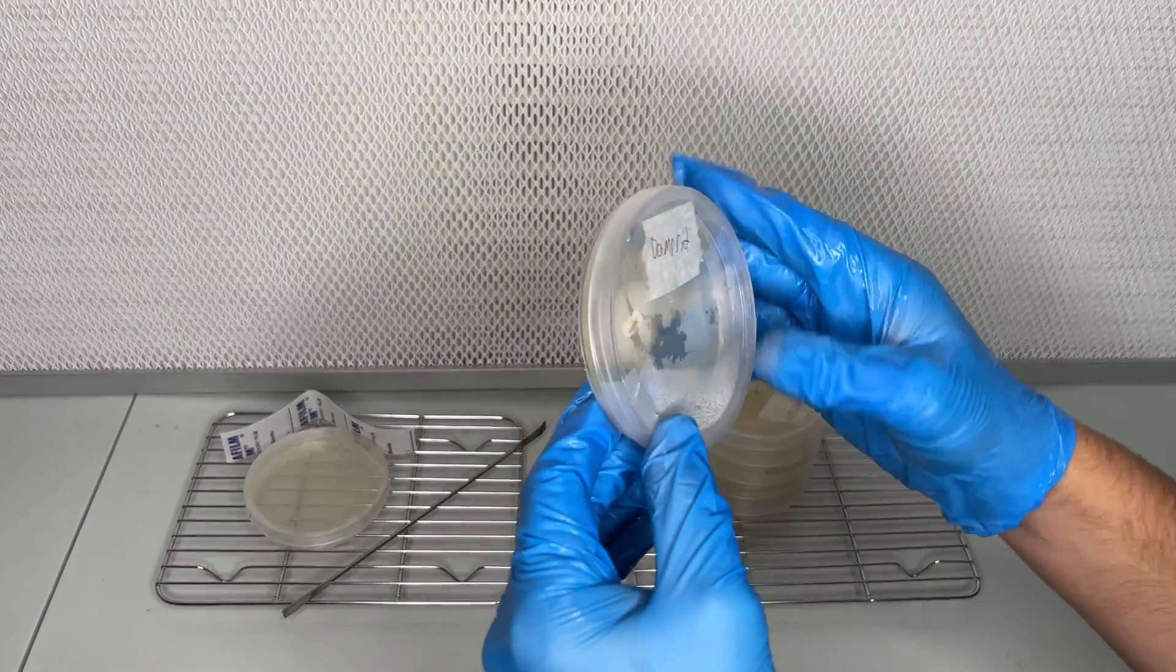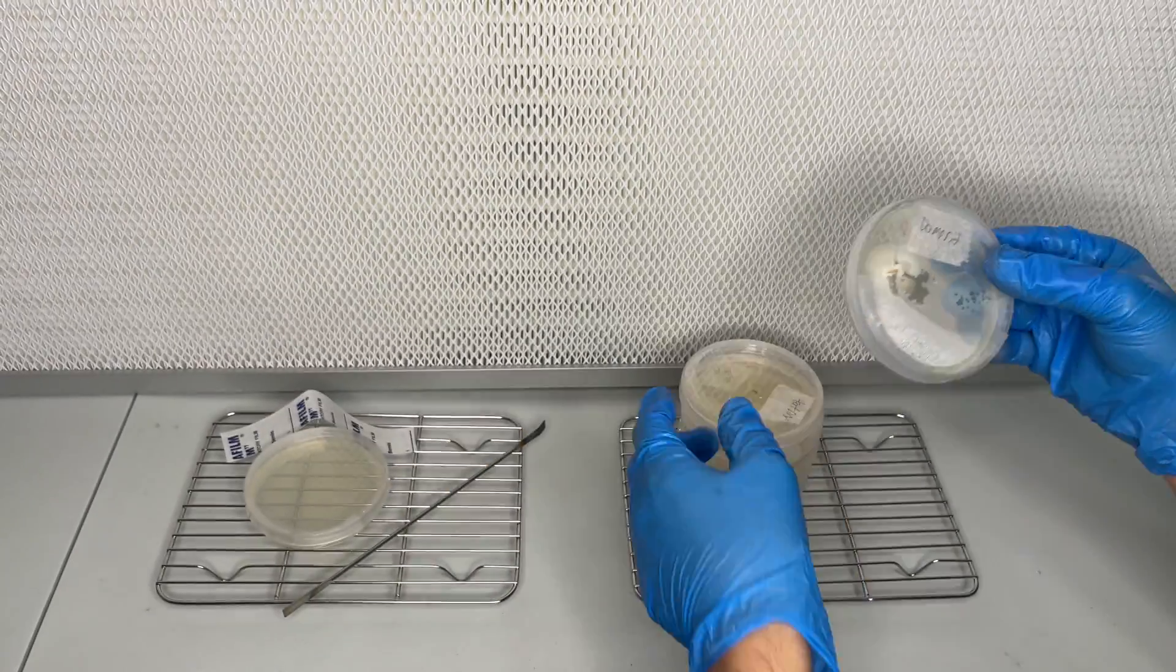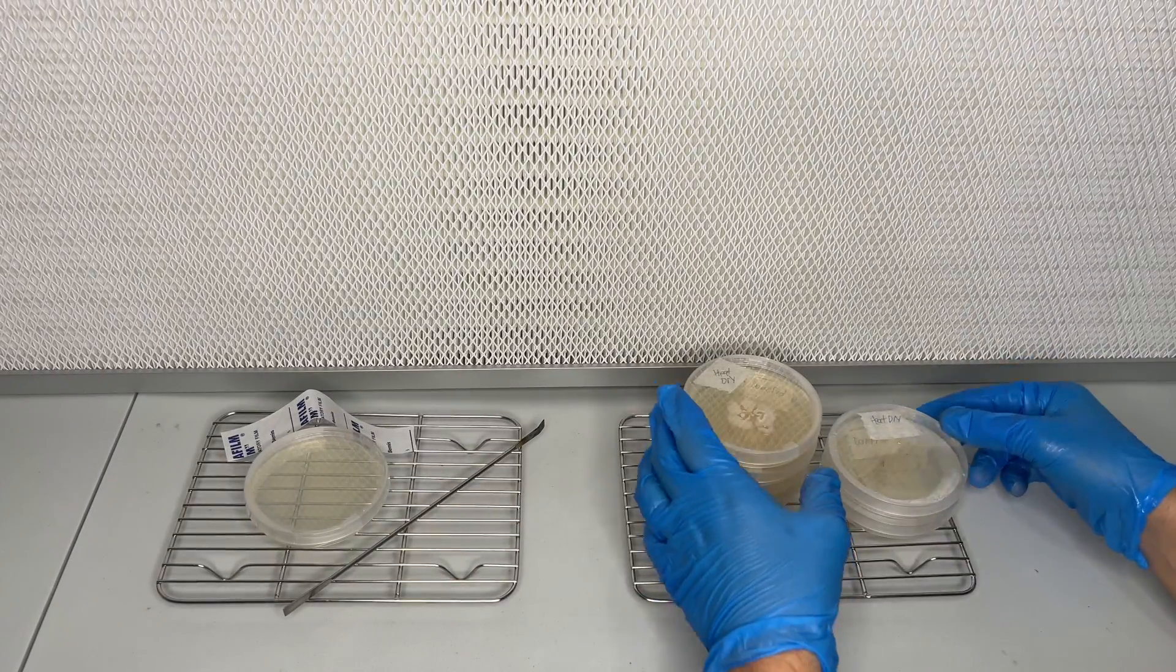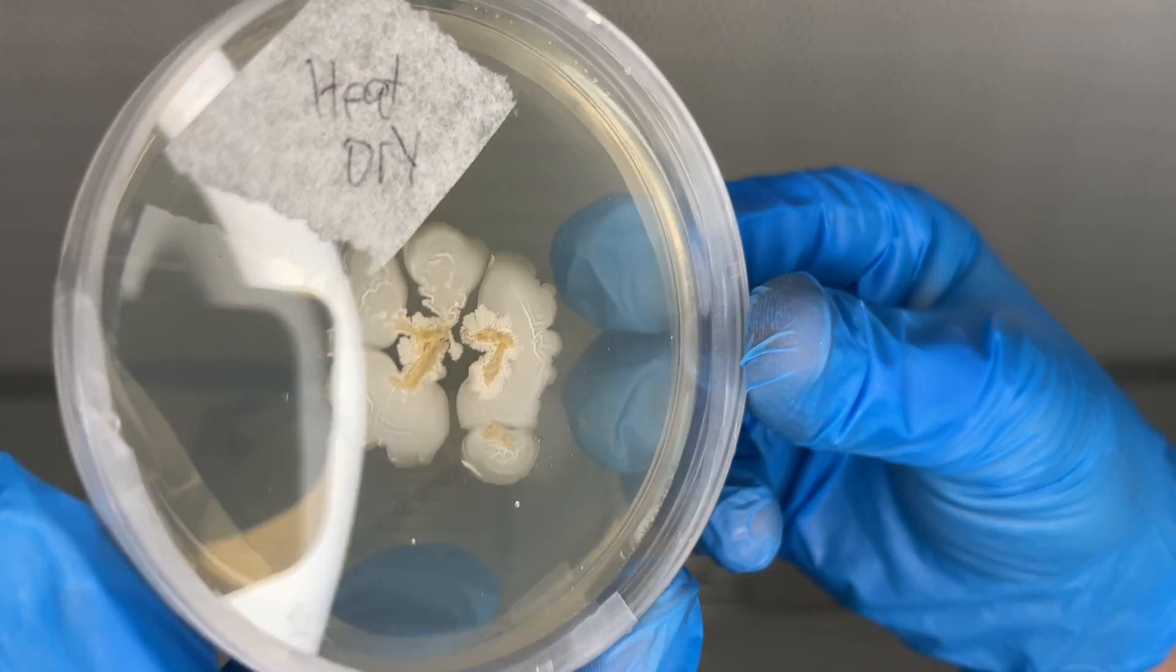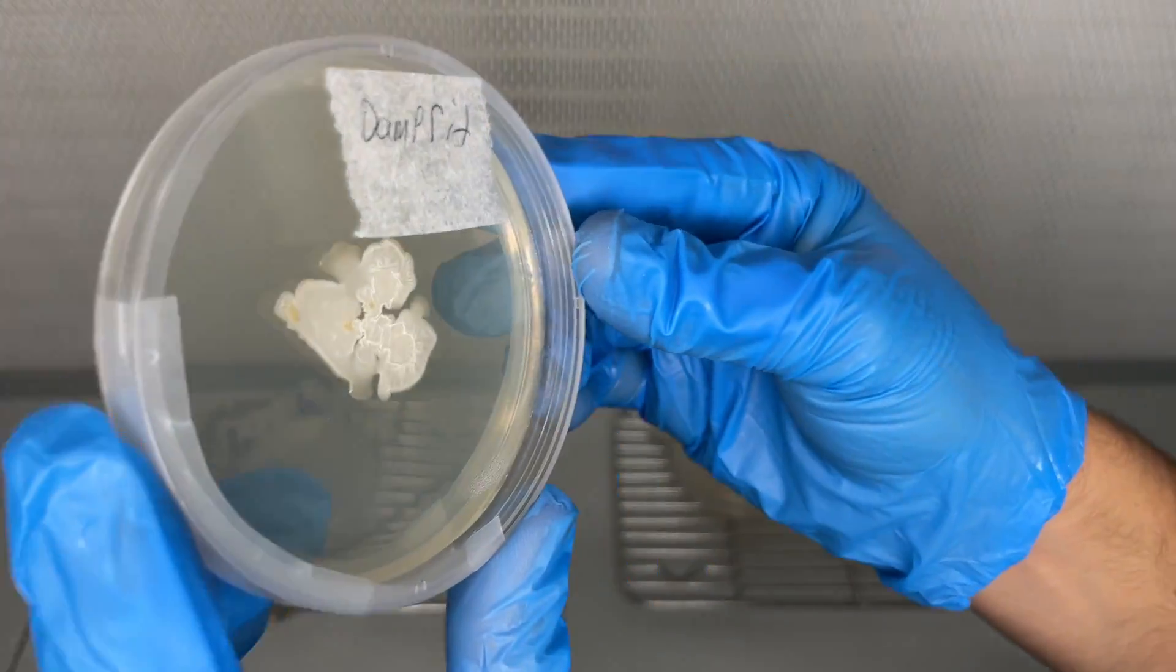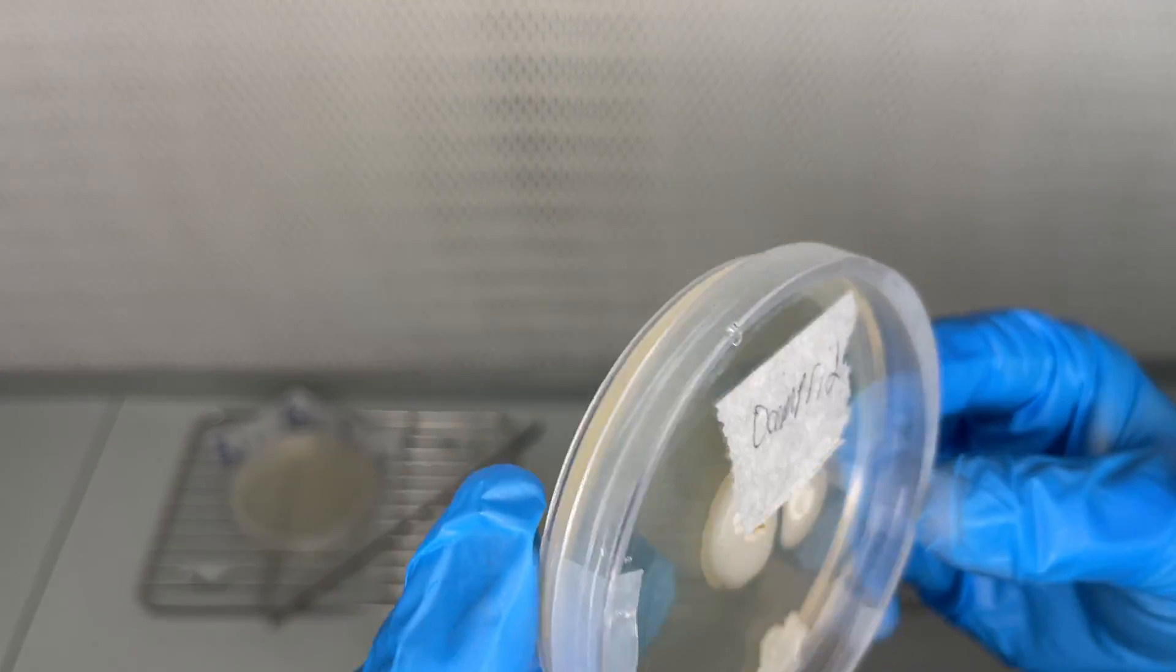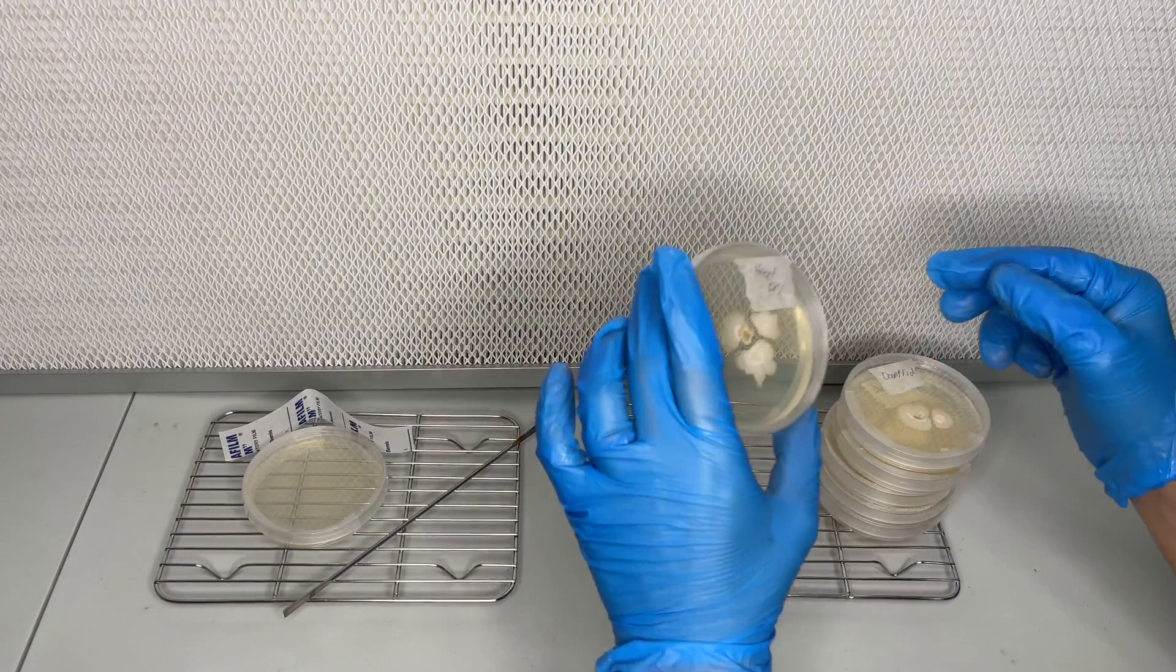After allowing the agar plates to incubate at 75 degrees Fahrenheit for two weeks the results were in. None of the heat dry agar plates were successful, one of them showing no growth at all and the others showing really bad bacterial growth. Out of the dampred batch they all had bacteria but one of the plates had a tiny piece of actual mycelium growing. So in the next part I go ahead and transfer away from the bacteria to a new plate to try to isolate the mycelium.